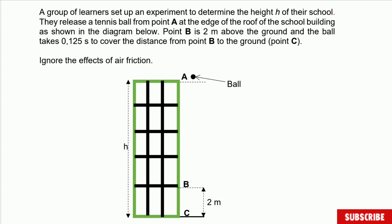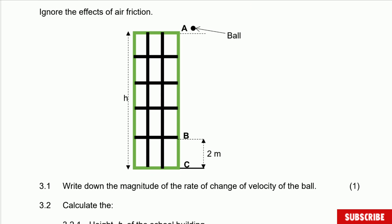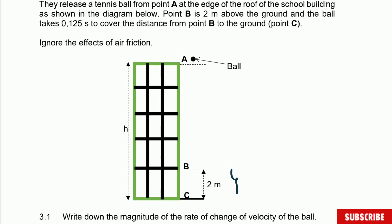Point B is 2 meters above the ground and the ball takes 0.125 seconds to cover the distance from B to C. So the time that the ball takes from B to C, according to the data, is 0.125 seconds — that is the time that the ball takes to cover B to C.